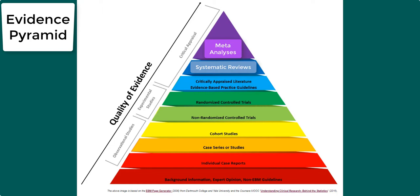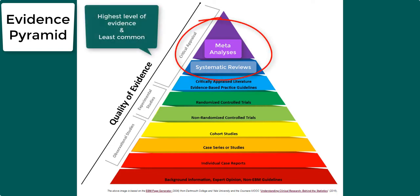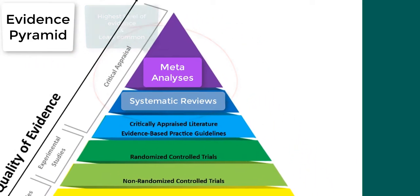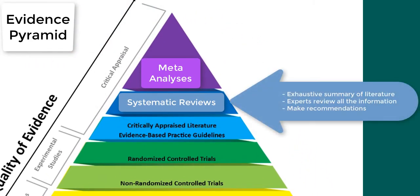The evidence pyramid shows us that systematic reviews and meta-analyses are the highest level of evidence and the least common. Systematic reviews provide an exhaustive summary of the scholarly literature related to a certain topic. They are often written by a panel of experts, which reviews all the information from both published and unpublished studies on a topic, and they eliminate the poorly done studies and make practice recommendations based on the well-done studies.